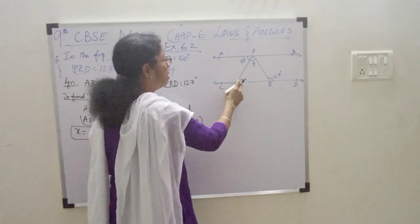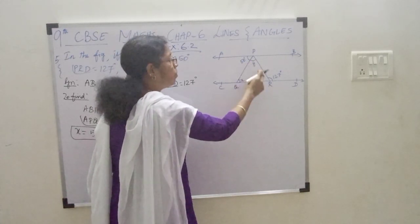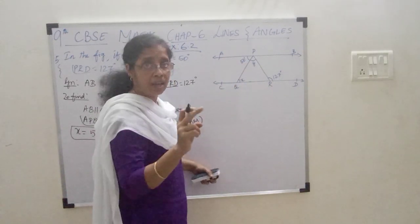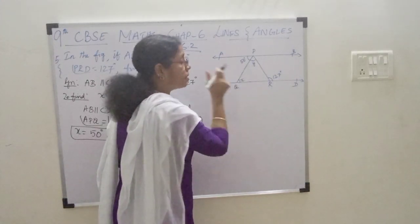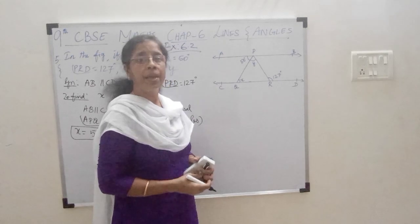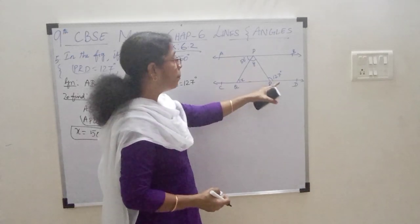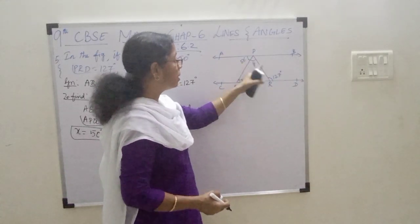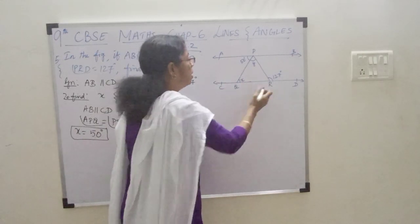It's a triangle. We got one angle. You have to find out Y. For that, you need one more — the third angle of the triangle. Angle PRD is given as 127. For what purpose are we given angle PRD? Angle PRD and the third angle PRQ are related — this angle and this angle.